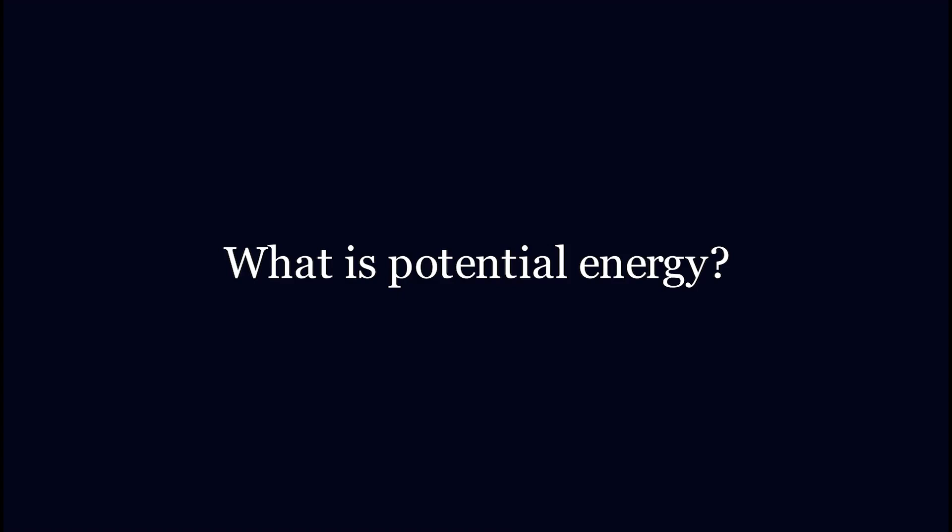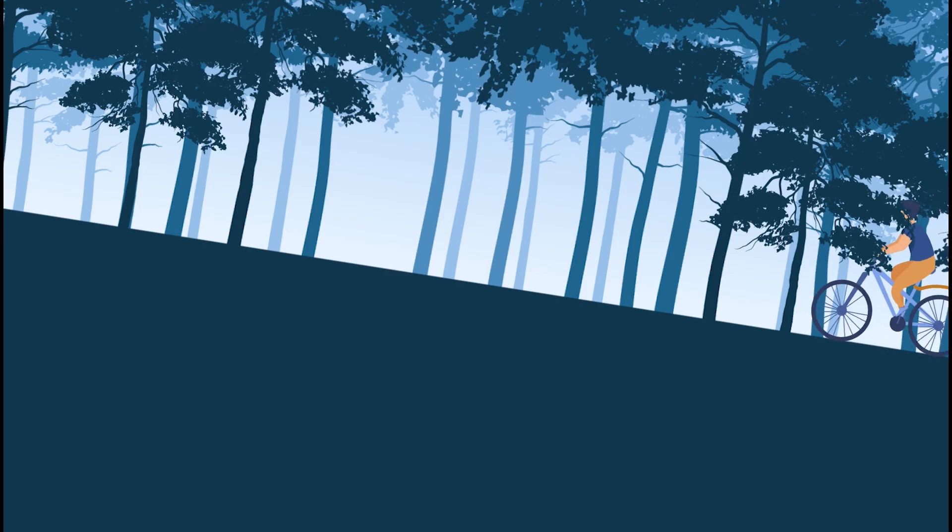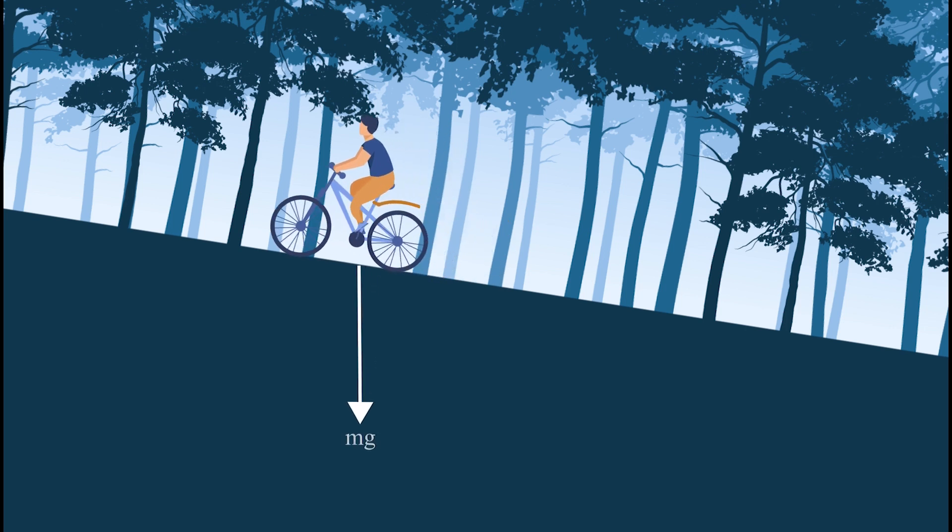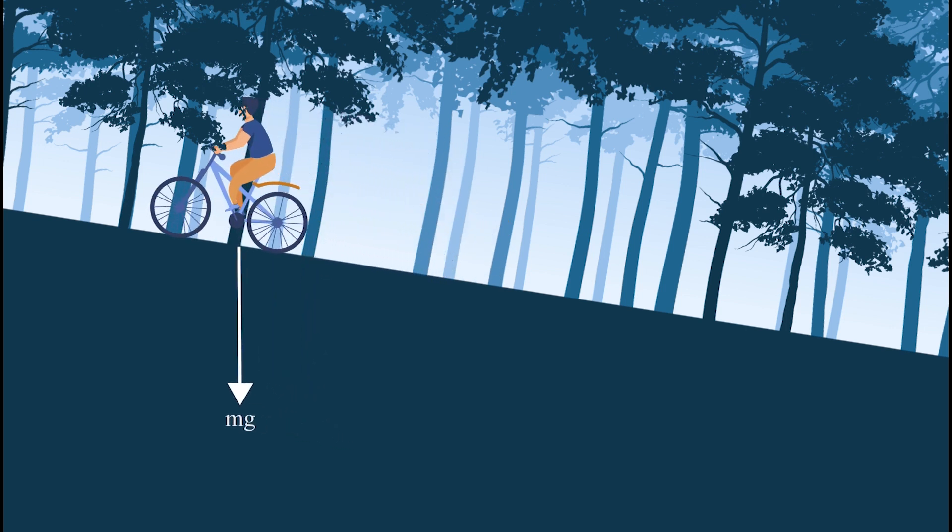Let's take an example like cycling up a hill. As the cyclist attempts to cycle up this steep hill he needs to put in lots of energy by pedaling against the force of gravity to gain elevation. So where does this energy go?